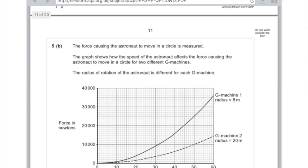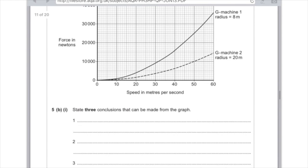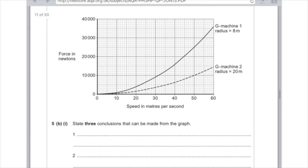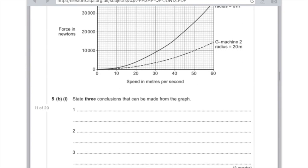Anyway, the force causing the astronaut to move in a circle is measured. The graph shows how the speed of an astronaut affects the force causing the astronaut to move in a circle for two different G machines. The radius of rotation of the astronaut is different for each G machine. State three conclusions that can be made from the graph, so have a good look at the graph. First of all, we can see here that the greater the speed, the greater the force. Secondly, we can see that the smaller the radius, the greater the force. And lastly, this one's slightly harder, as the speed increases, the rate of change in force increases. But what you're doing really here is just saying what you can see on the graph.